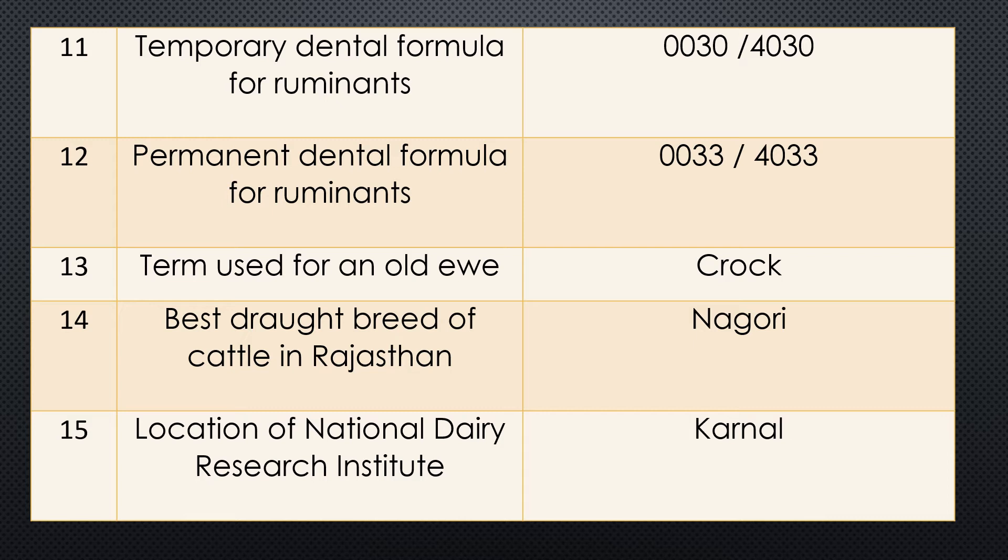Question thirteen: Term used for an old ewe. Answer is an old ewe is called a crock.